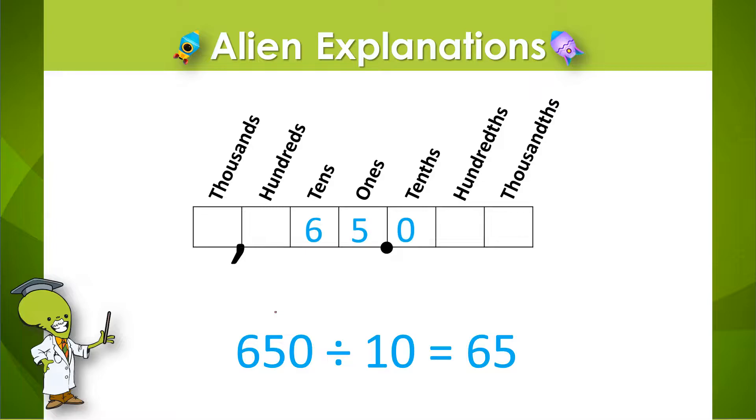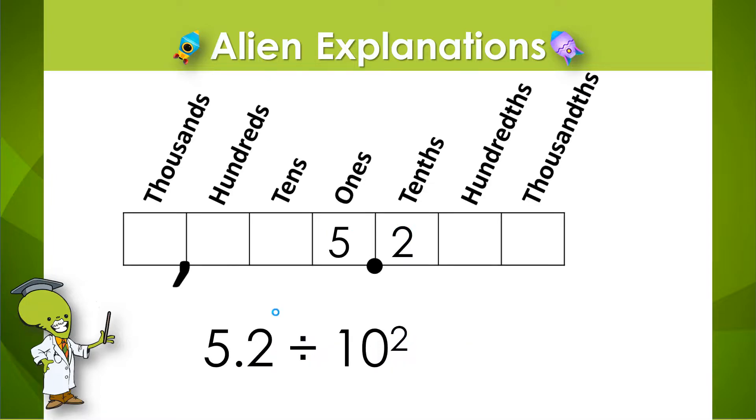So what would happen if you divided a number by a power of 10? Well, in this example, we have 5 and 2 tenths divided by 10 to the power of 2. So 5 and 2 tenths is going to be divided by 10 two times, which means that each digit in the number is going to move down two place value spots.